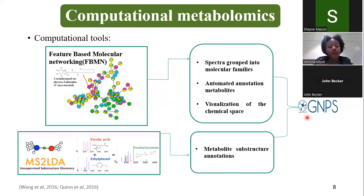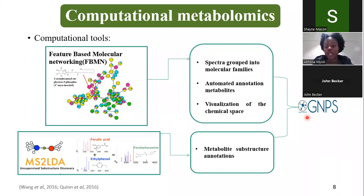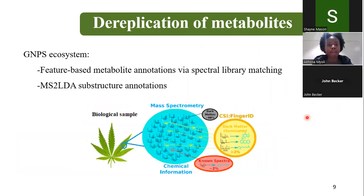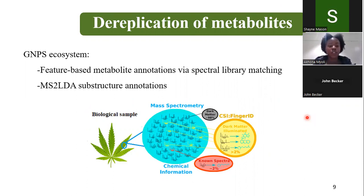By annotating substructures, MS2LDA propagates the identity of a compound. Both feature-based molecular networking and MS2LDA, in addition to other molecular networking tools, are all housed in a web-based ecosystem called GNPS. These tools help address one of the biggest challenges in natural product research, which is the lack of dereplication of compounds, which often leads to the re-isolation of known chemical entities instead of discovering new novel compounds.